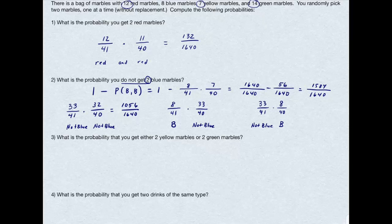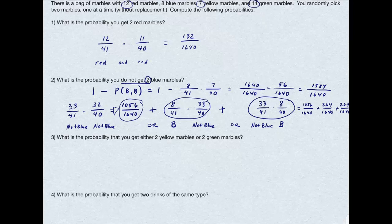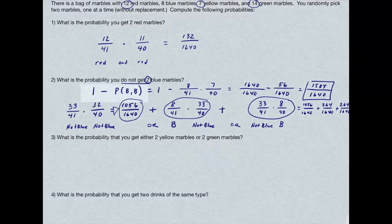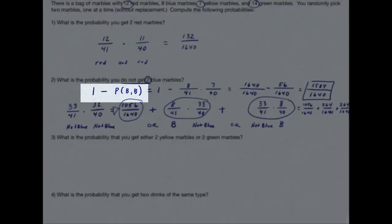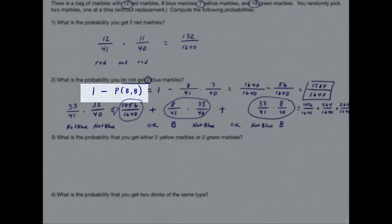So I want the probability of not blue, not blue, or blue, not blue, or not blue, blue. The or is addition, so I want to add these three fractions together. And when I add these fractions together, I get, in fact, the exact same answer that I got, simply by taking 1 minus the probability I did get 2 blue marbles. I'm going to argue it's much easier to do the first method than it is the second, but both are valid ways of solving this problem.